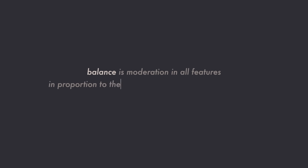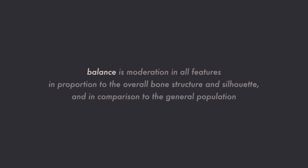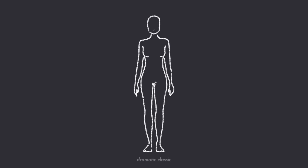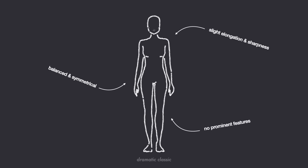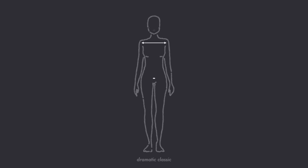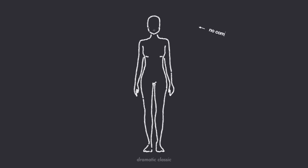Dramatic Classic: balance and vertical. If you have the dramatic classic body type, then your dominant features are balance and vertical. Balance is a nearly equal and blended mix of yin and yang — moderation in all features, in proportion to the overall bone structure and silhouette, and in comparison to the general population. The dramatic classic has an overall moderate and symmetrical balanced appearance with just a touch of elongation and sharpness. All features and proportions carry a similar visual impact; nothing in particular appears prominent or draws the eye. Dramatic classics will not usually experience fit issues with one particular part of their figure. Instead of accommodating a prominent feature, dramatic classics need to accommodate balance and slight vertical.